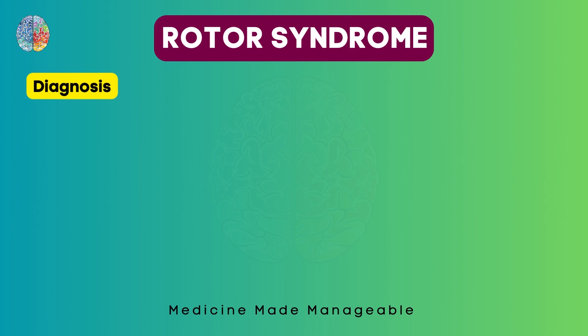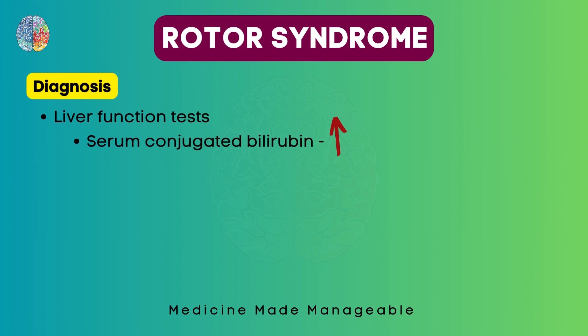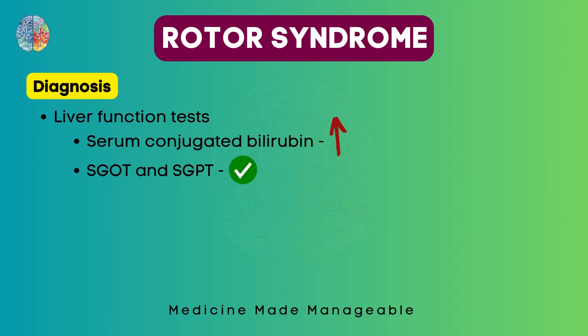How are you going to diagnose this condition? We can do liver function tests where we will see serum conjugated bilirubin which will be increased. The AST and ALT will be normal because these enzymes are mostly increased when there is an injury to the hepatocyte, as seen in autoimmune hepatitis or viral hepatitis. The serum alkaline phosphatase will also be normal.